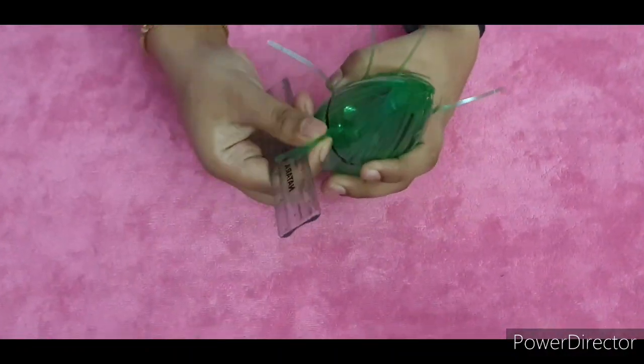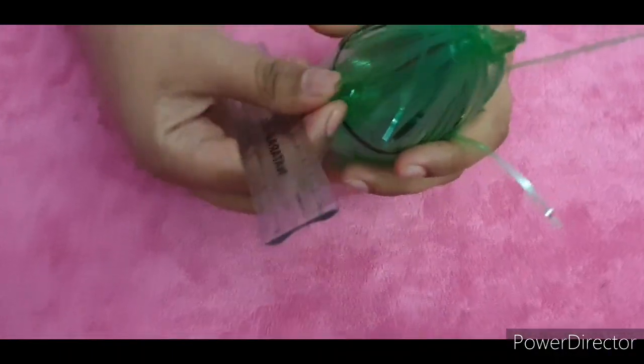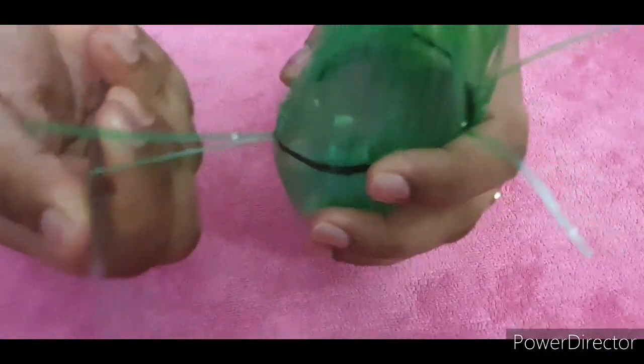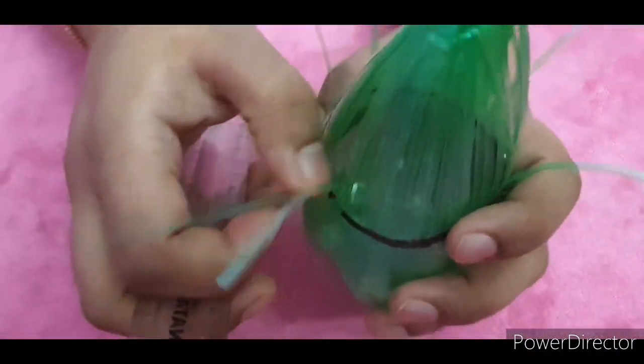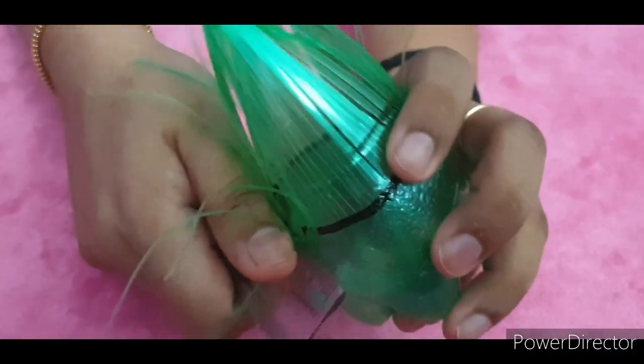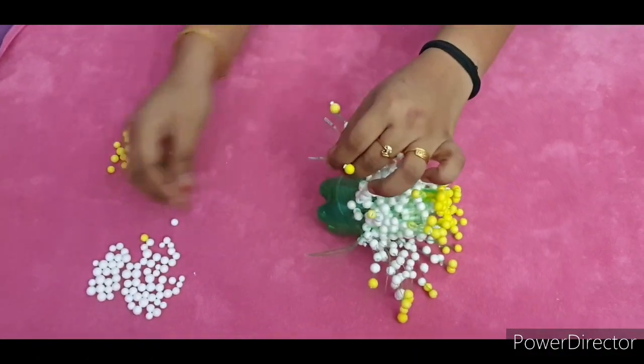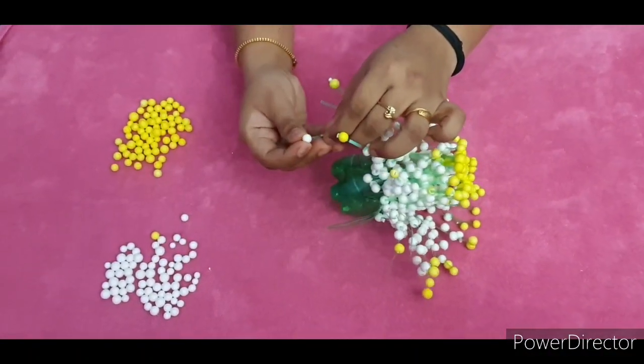Now using a scale, we will bend these strips outwards as you can see. Now insert the styrofoam beads into each strip.